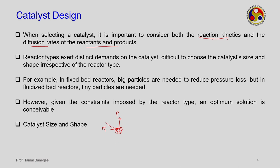Both reaction kinetics and diffusion are important. Different reactors exert different demands on the catalyst, making it very difficult to choose catalyst size and shape independently of reactor type. In a fixed bed reactor, large particles reduce pressure drop but provide less surface area for reaction, leading to lower conversion. Heat transfer may be easier with larger particles.